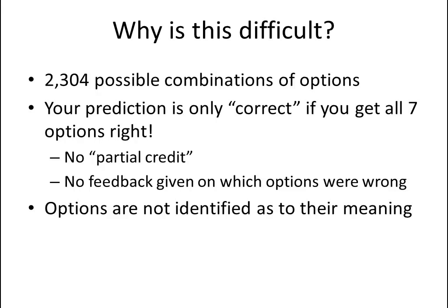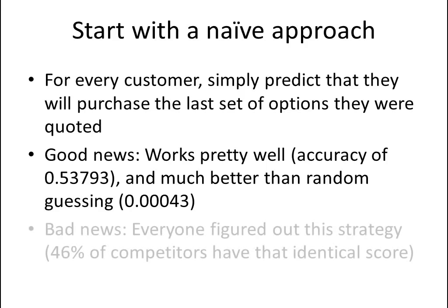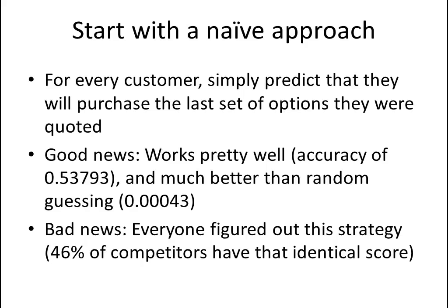In addition, options are not even identified as to their meaning — all you know is that they are A through G. So let's start with a naive approach to predicting. For every customer, let's simply predict that they will purchase the last set of options they were quoted. The good news is that this works pretty well — you get an accuracy of 0.53793. The bad news, however, is that everyone figured out this strategy, and indeed 46% of competitors have that identical score for that exact reason.